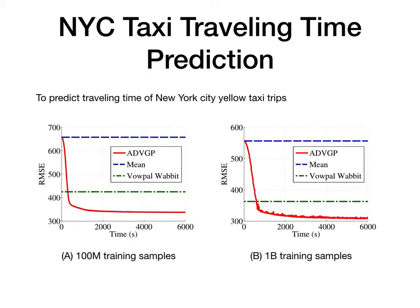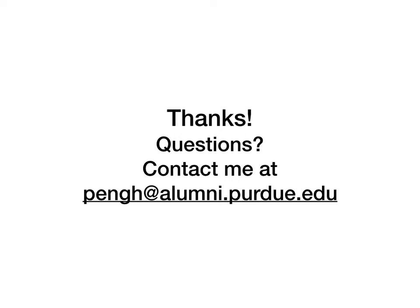To conclude, we have demonstrated ADVGP on real-world large-scale applications using an asynchronous algorithm, and shown the potential to explore other low-rank structures using our variational lower bound. Thanks for watching my presentation. If you have any questions, I'm sorry that I cannot answer in person, but you are welcome to send your questions to my email at pengh at alumni.purdue.edu.